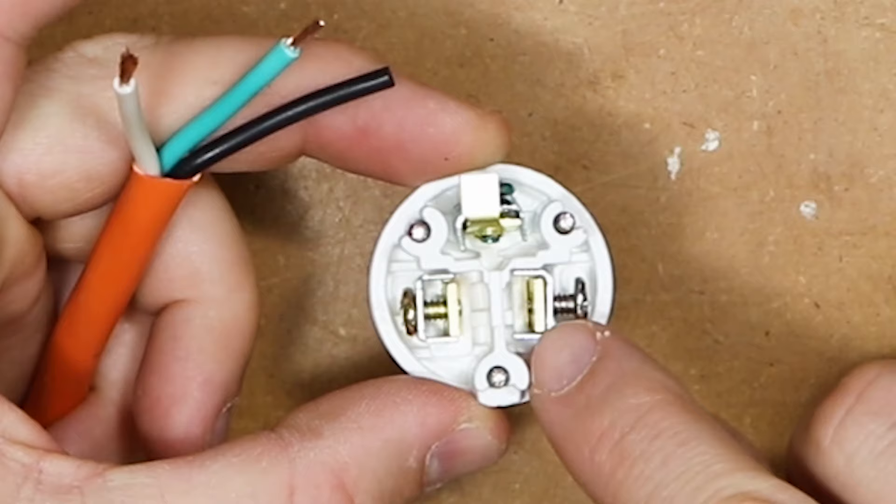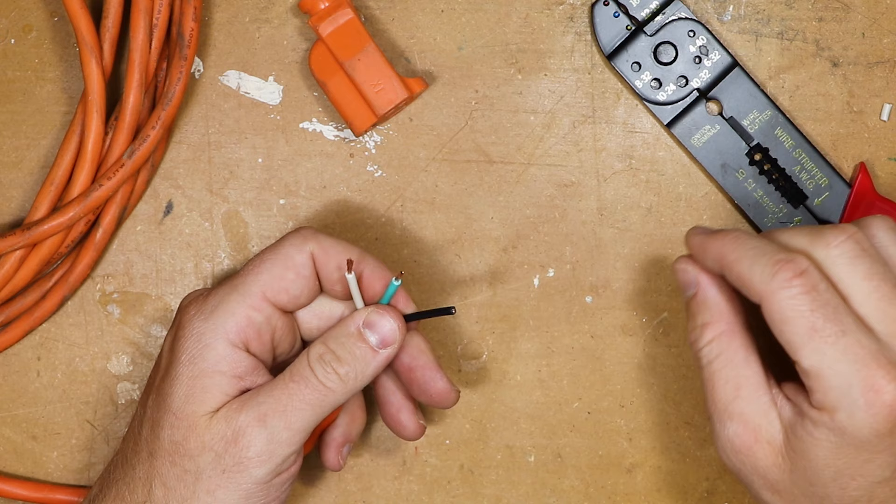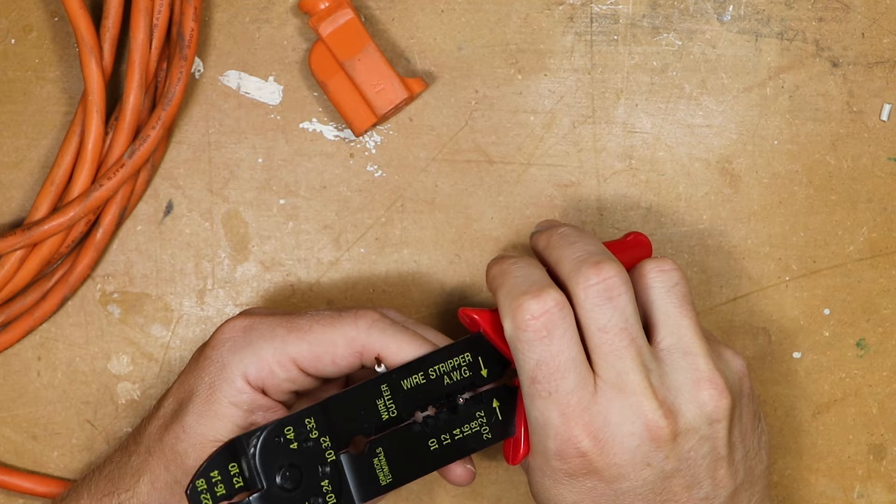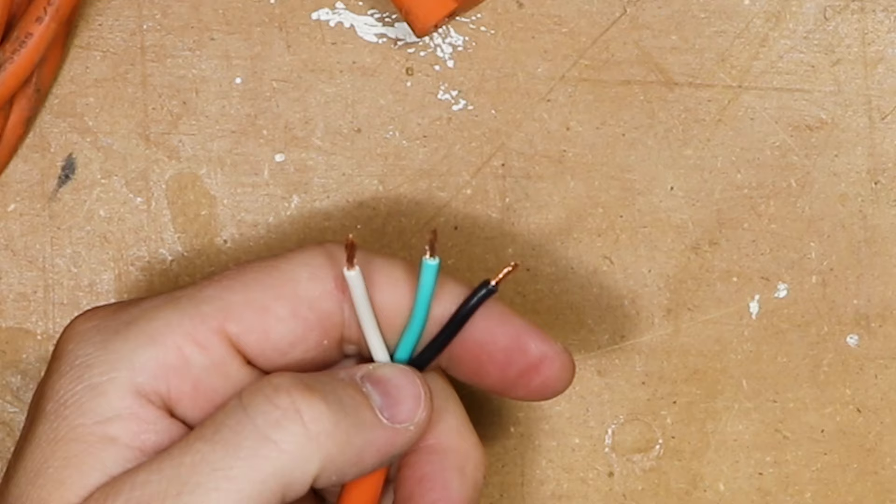So you want enough wire that you can get it into these little clamps, but not too much wire that the wire is protruding out of these clamps. Just make sure they're all uniform. If you get it wrong, you just go back and strip a little bit more off.